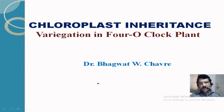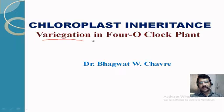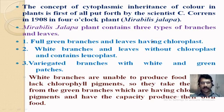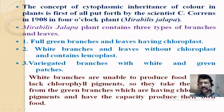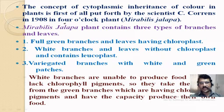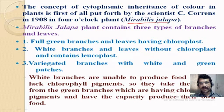Hello friends, welcome to the course on genetics. In this video we are going to learn chloroplast inheritance. It is a type of cytoplasmic inheritance, and we will study the example of variegation in the four o'clock plant, also known as Mirabilis jalapa.